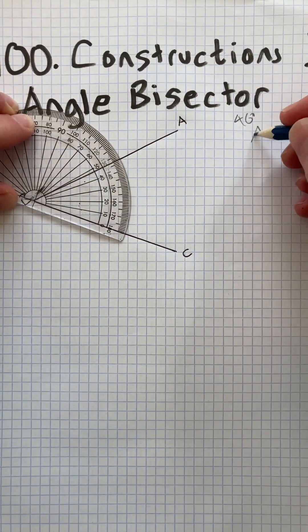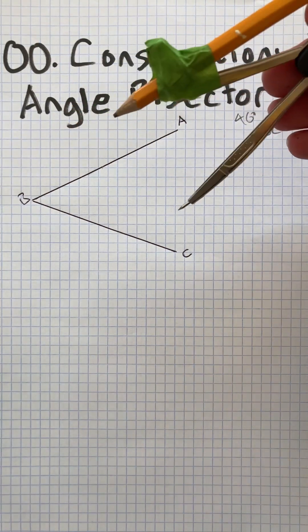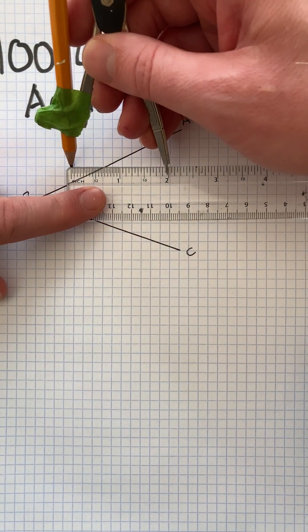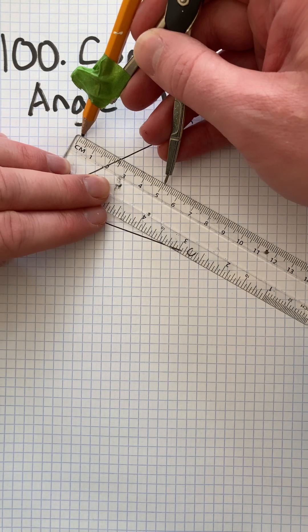So ABC is 46 degrees. To bisect that, get a compass and set it to some measurement, let's say 5 centimeters.